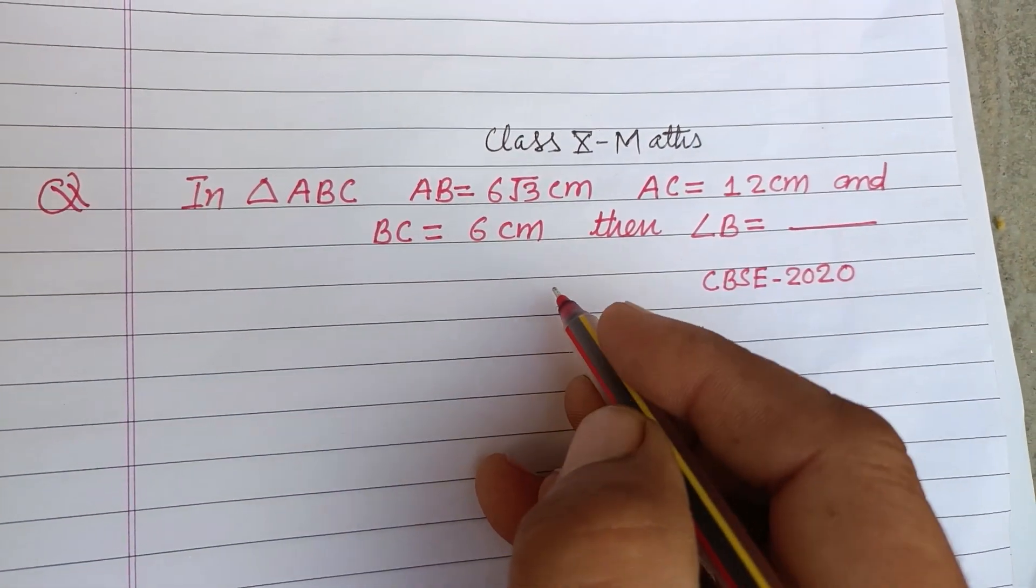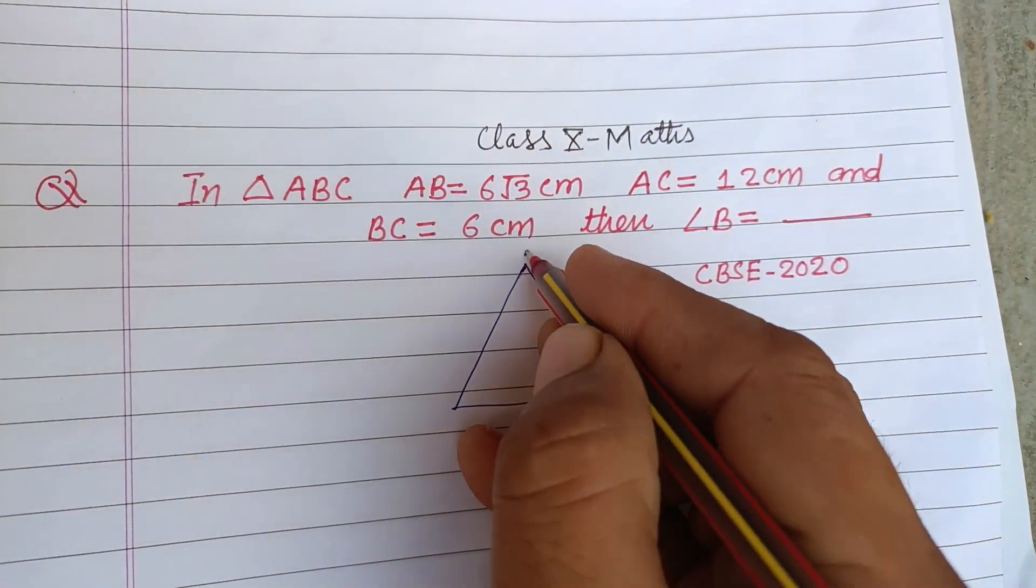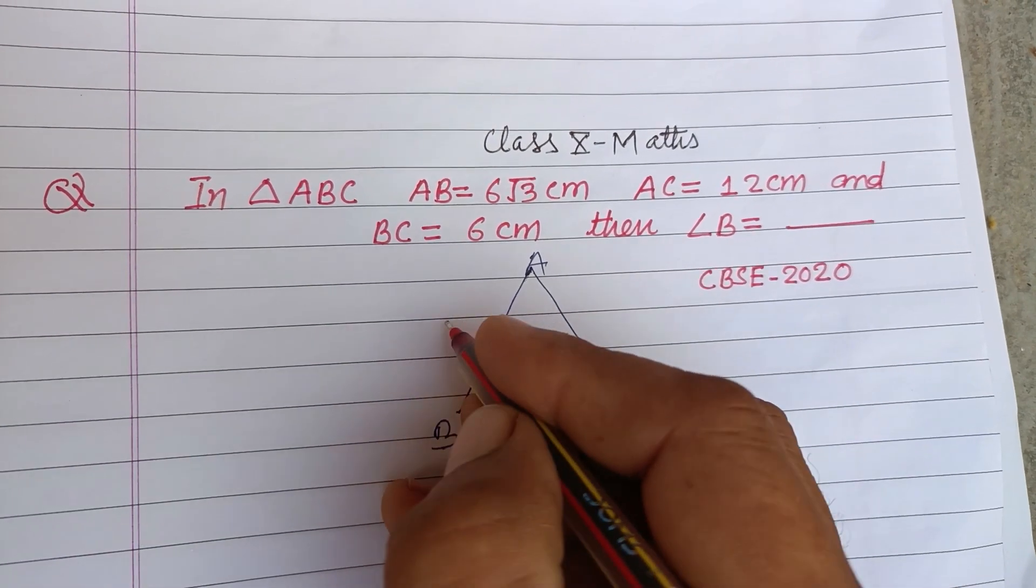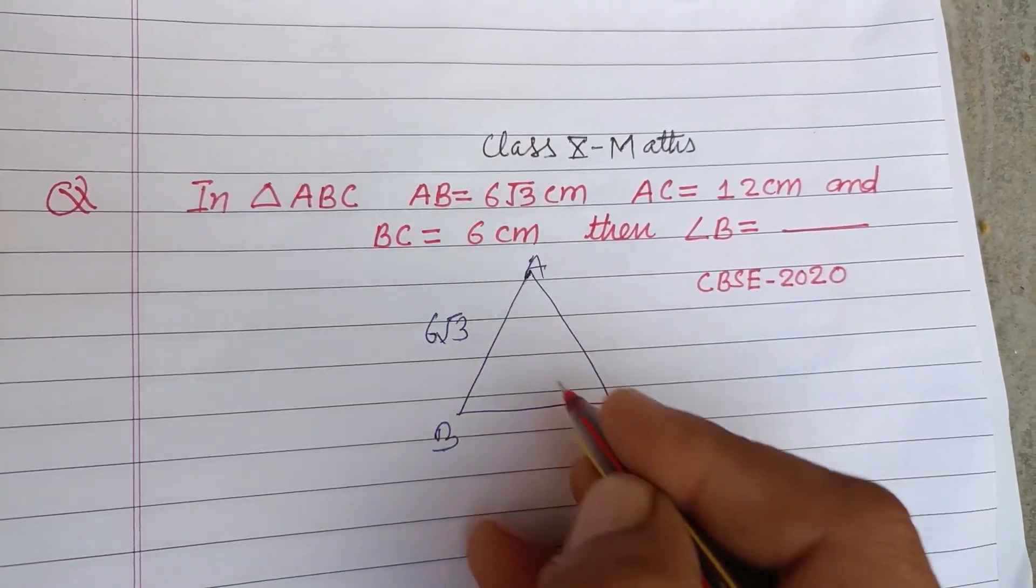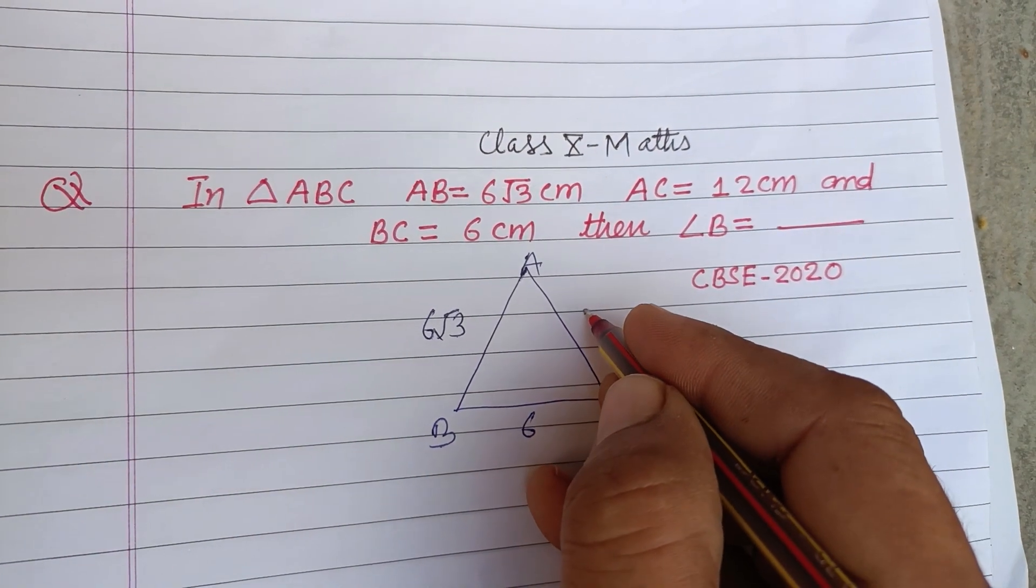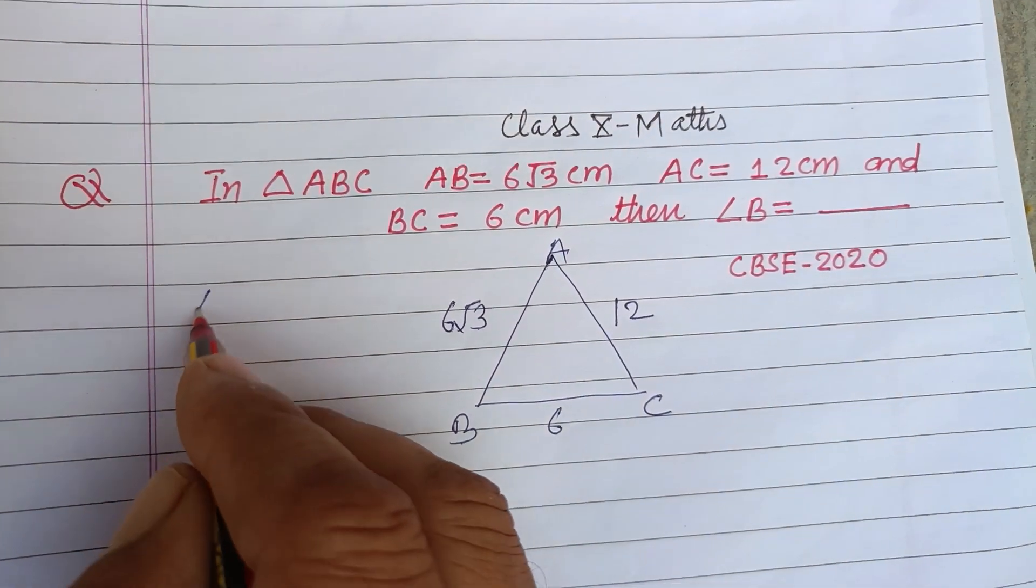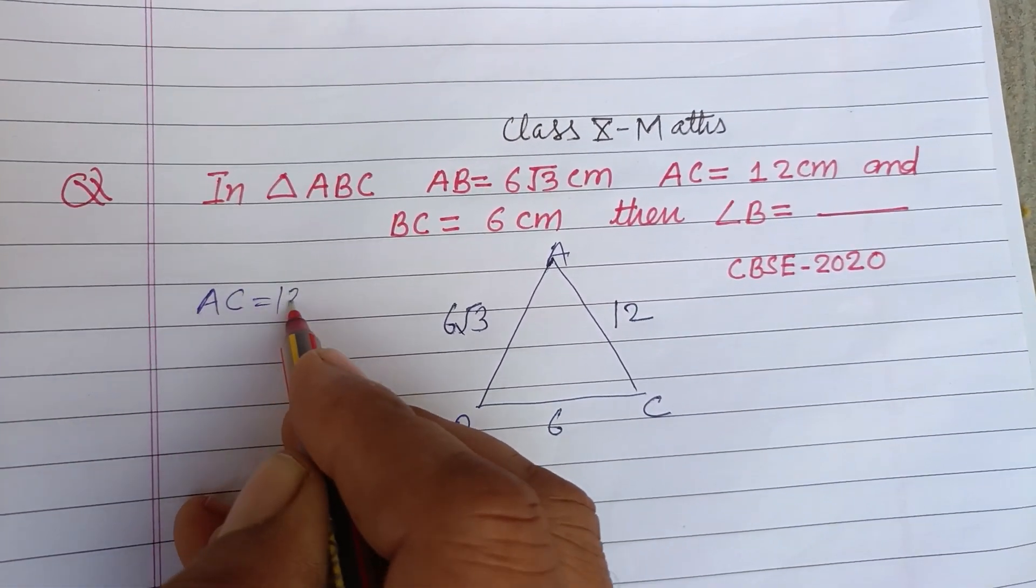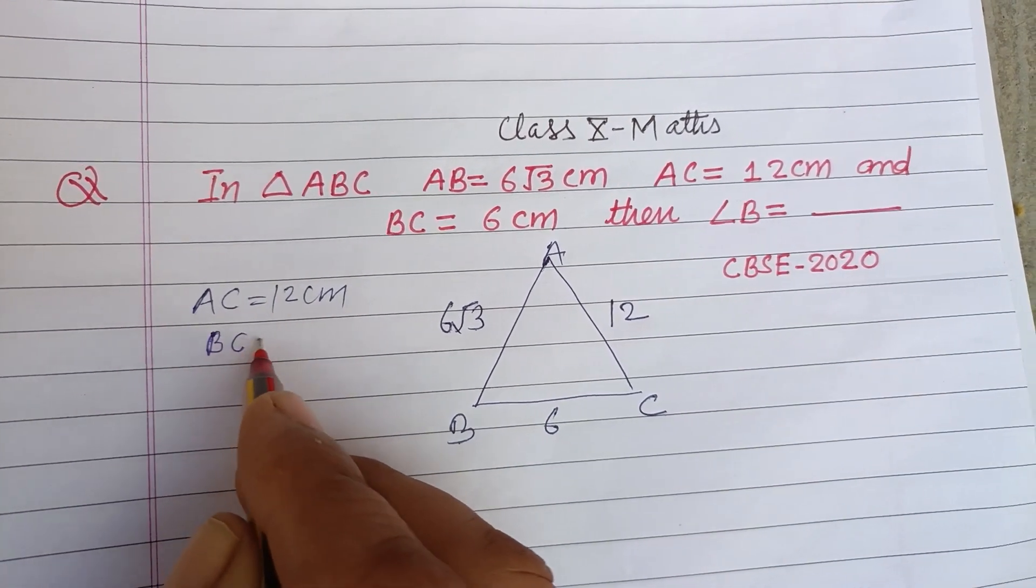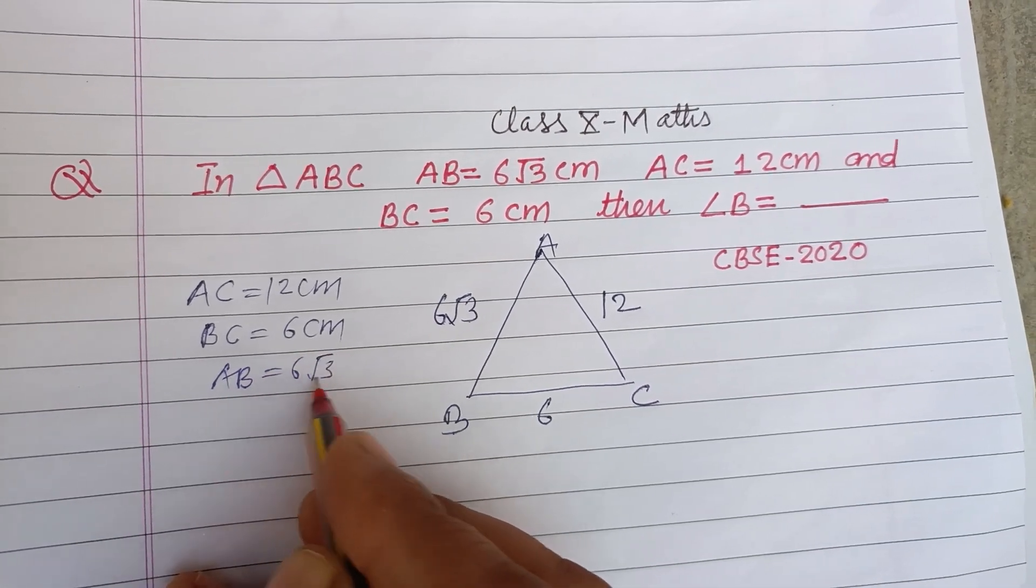So students, here a triangle is given ABC. AB is 6√3, BC is 6, and AC is 12. So here AC is 12 centimeter, BC is 6 centimeter, and AB is given to us as 6√3 centimeter.